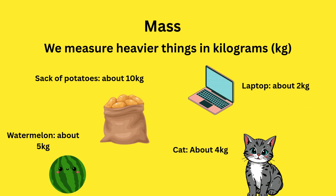We measure heavier things in kilograms. A sack of potatoes is about 10 kilograms. A watermelon is about 5 kilograms. A cat is about 4 kilograms. And a laptop is about 2 kilograms.